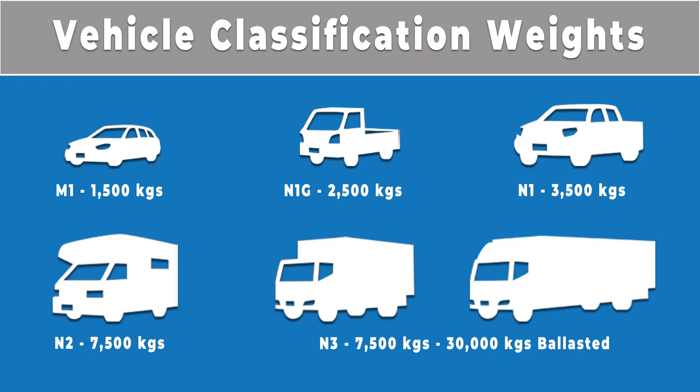The different vehicle categories are: M1, a vehicle weighing 1,500 kilograms; N1G, a vehicle weighing 2,500 kilograms; N1, a vehicle weighing 3,500 kilograms; N2, a vehicle weighing 7,500 kilograms with no ballast; and finally N3, a vehicle weighing 7,500 kilograms with ballast, and up to 30,000 kilograms.